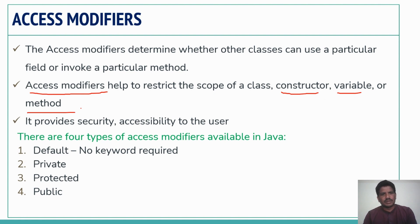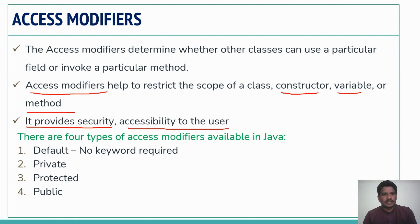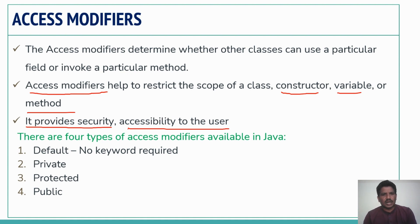I will show you with an example. Access Modifiers provide security and accessibility to the user — how do we provide security to our data, and how do we access a particular variable or method. It all depends on Access Modifiers. Java provides four types of Access Modifiers.